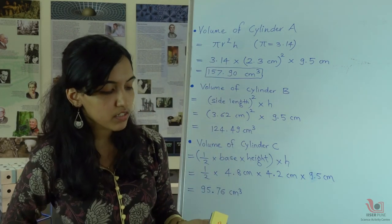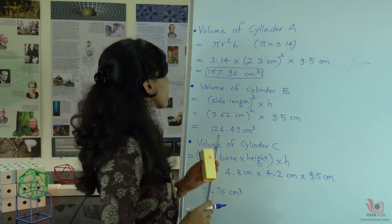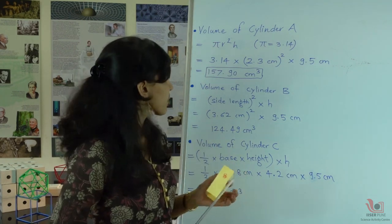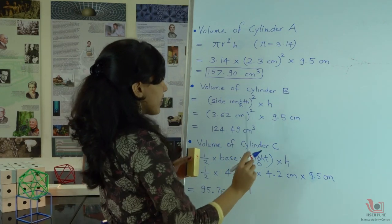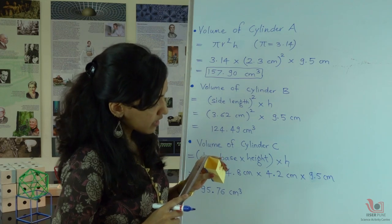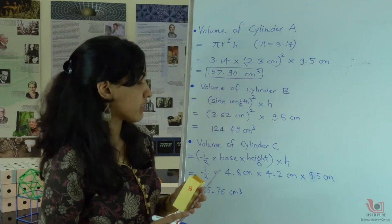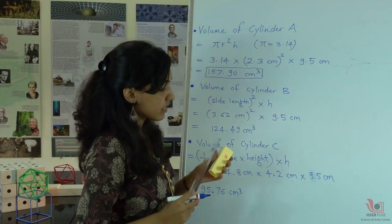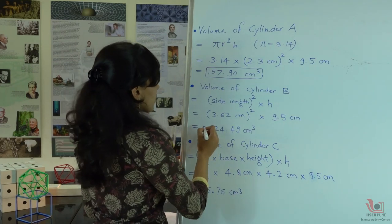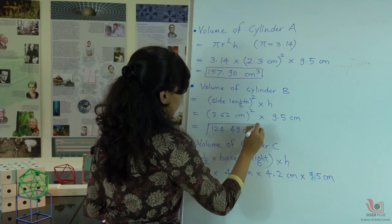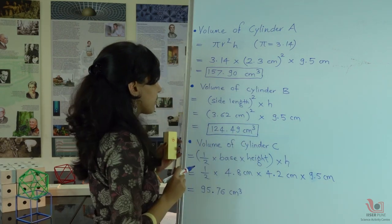Now we will calculate the square base cylinder, which is the cuboid. The volume of this cuboid is 124.49 cm³.